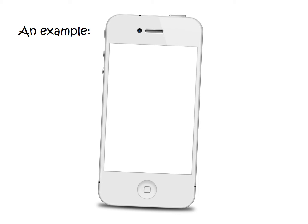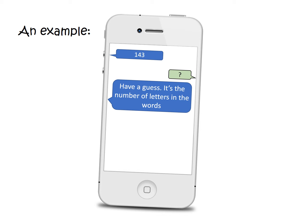Here's an example: 143. Have a guess — it's the number of letters in the words: I love you. And 1432. So here you can see that 143 is being used to mean I love you, and in the bottom example you've got 1432, meaning I love you too, as in I love you as well.